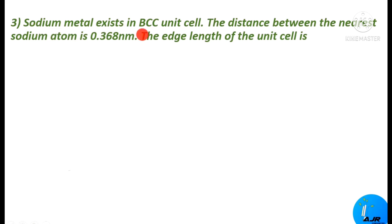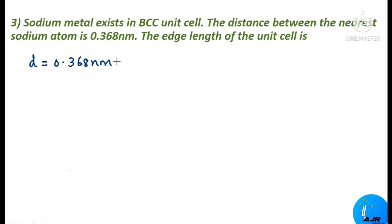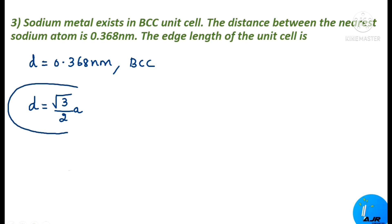The next problem: sodium metal exists in a BCC unit cell. The distance between the nearest sodium atoms is 0.368 nanometers. The edge length of the unit cell is? Here they have given that sodium has BCC structure, the D value is given as 0.368 nm, and they are asking for the edge length. For body centered cubic, the formula relating distance between nearest atoms and edge length is D = (√3/2) × A. Now you might understand why that tabular column is so important — only if you know these formulas is it possible to solve the problem.